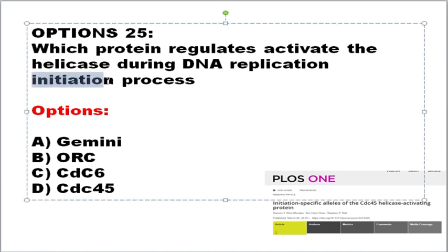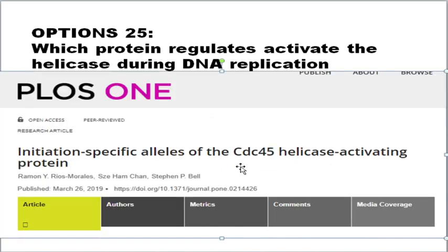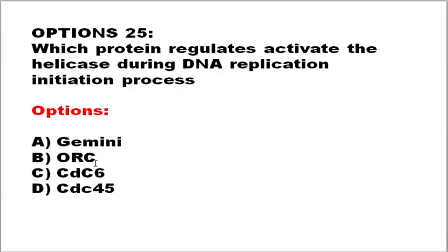Which protein regulates the activity of helicase during the DNA replication initiation process? There are three processes in DNA replication: initiation, replication, and termination. The correct answer is CDC45. Referring to the Cell journal article, CDC45 is called the helicase-activating protein. In the next video I'll continue with more questions. Please subscribe to the YouTube channel so we can grow together — your support is very important.